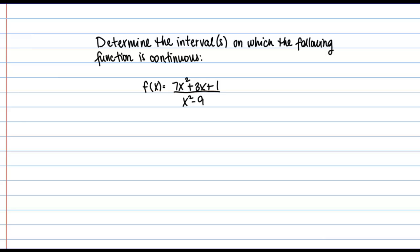And our function in this case is a rational function. f of x equals 7x squared plus 3x plus 1 all over the quantity x squared minus 9.